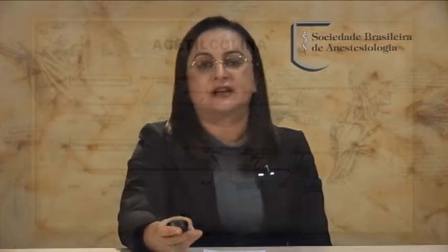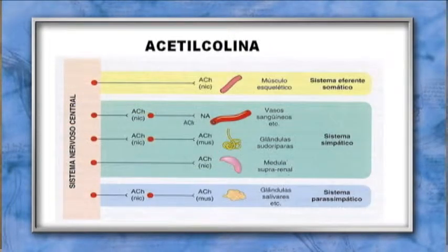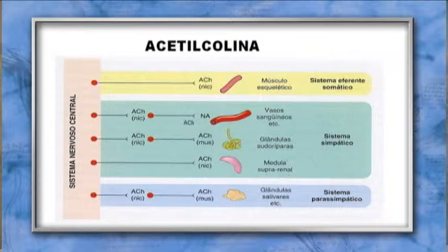Iniciamos o estudo da farmacologia do sistema nervoso central pelos neurotransmissores. O primeiro é a acetilcolina, excitatória, presente no sistema nervoso periférico e central. No sistema nervoso periférico, é o neurotransmissor pré-ganglionar tanto do simpático quanto do parassimpático, e também nas fibras pós-ganglionares do parassimpático. A acetilcolina está presente nos neurônios pré-ganglionares e pós-ganglionares do sistema parassimpático, e como neurotransmissor no sistema aferente somático.